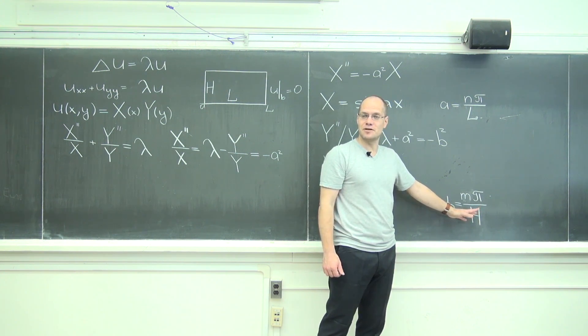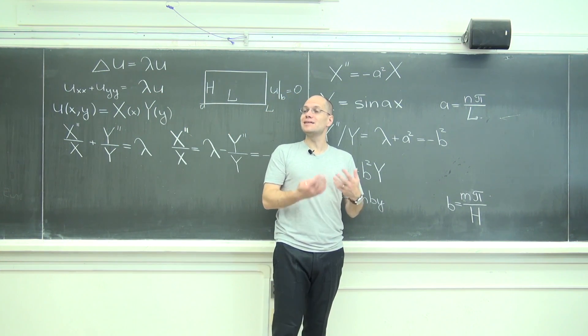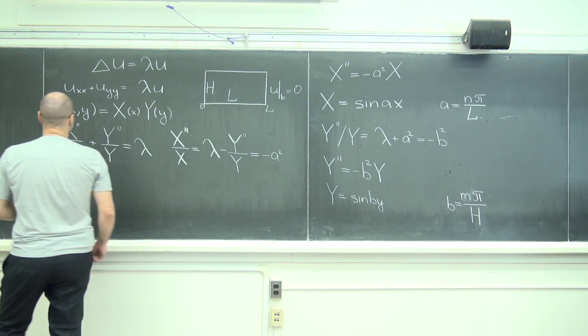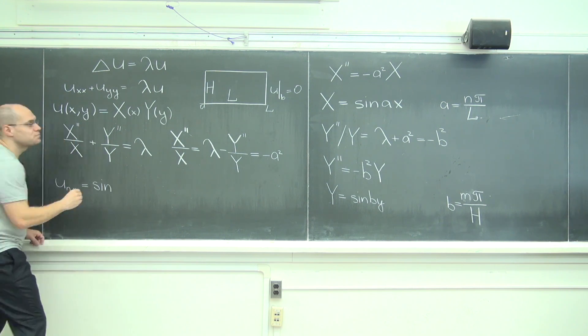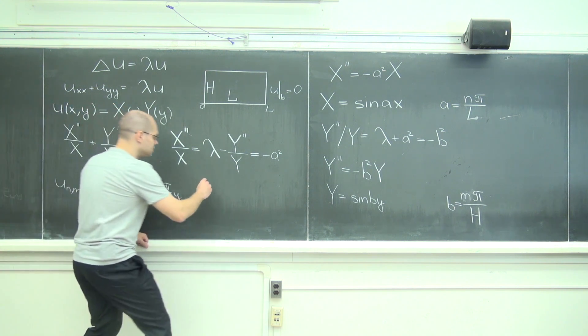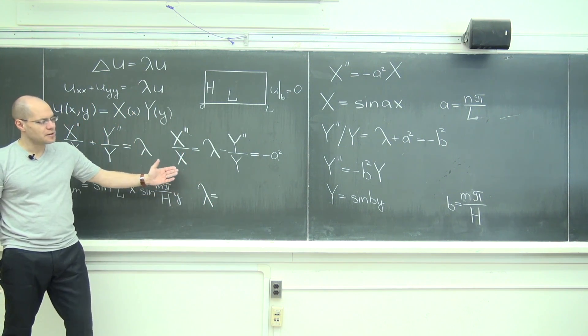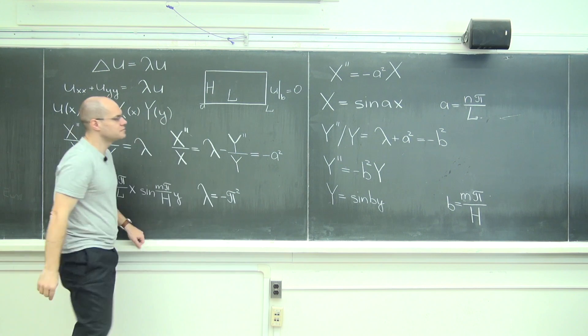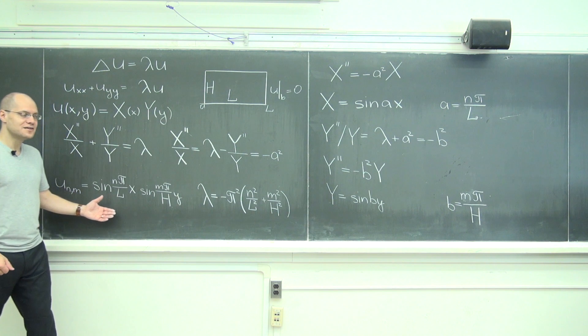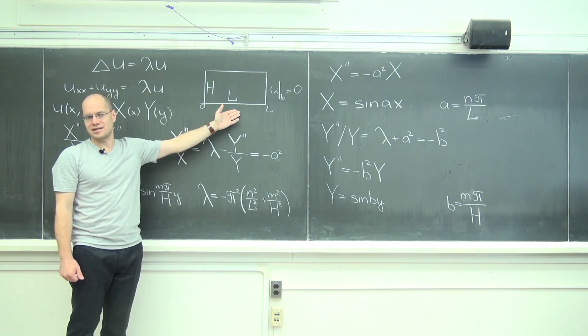It's now time to write down the answer. We're basically ending up with a double-indexed family of functions. That's my eigenfunction, and the corresponding eigenvalue lambda equals minus a squared minus b squared. There you go - we have solved the Laplace eigenvalue problem on an arbitrary rectangle with zero boundary conditions.